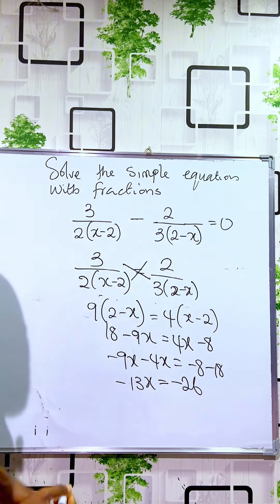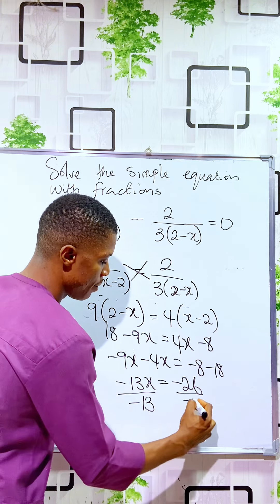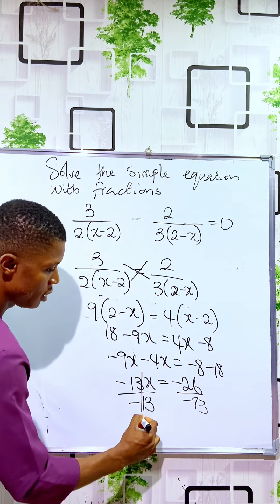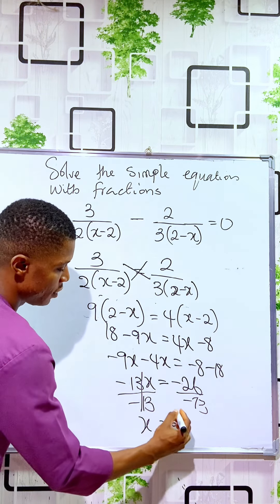For you to get the value of x you divide by minus 13 and divide by minus 13. If you divide by minus 13 you see that x is equal to 2. So the value for x is actually 2.